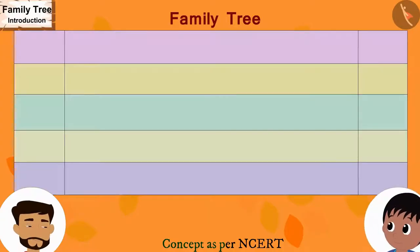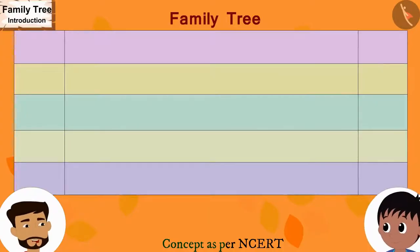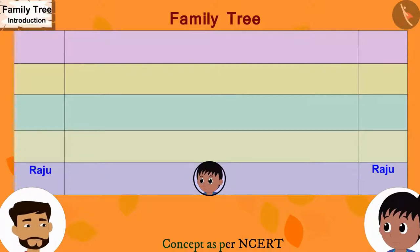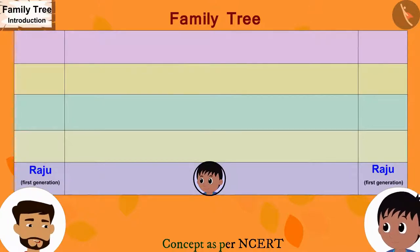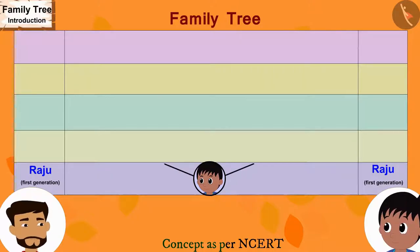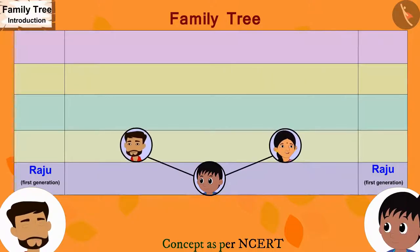Look, Raju. First, I will write your name here — this is our first generation. Now, I will draw two lines above your name and write your mother's name and my name. We are both in the second generation of this family.